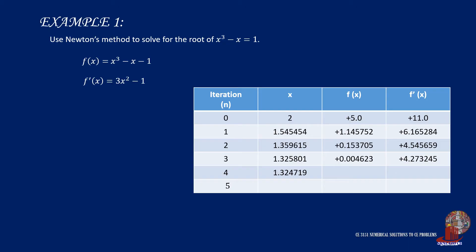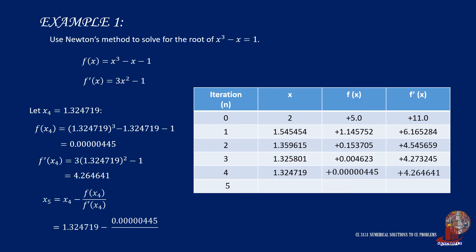Next, move on to the next iteration. That is, use x sub 4 of 1.324719 into the two functions. f of x sub 4 becomes 4.45 times 10 raised to the negative 6, and f' of x is still positive 4.264641. The next value of x, that is x sub 5, is then computed as 1.324718.